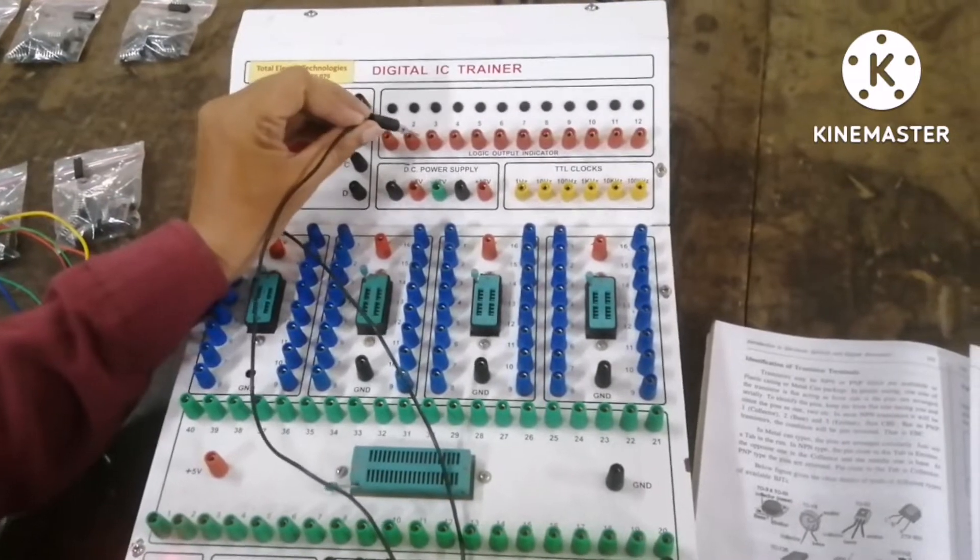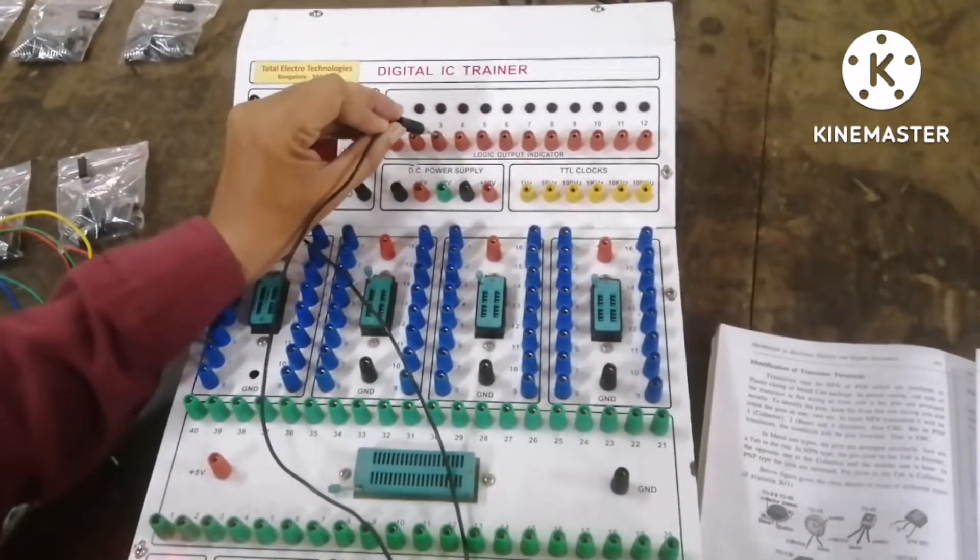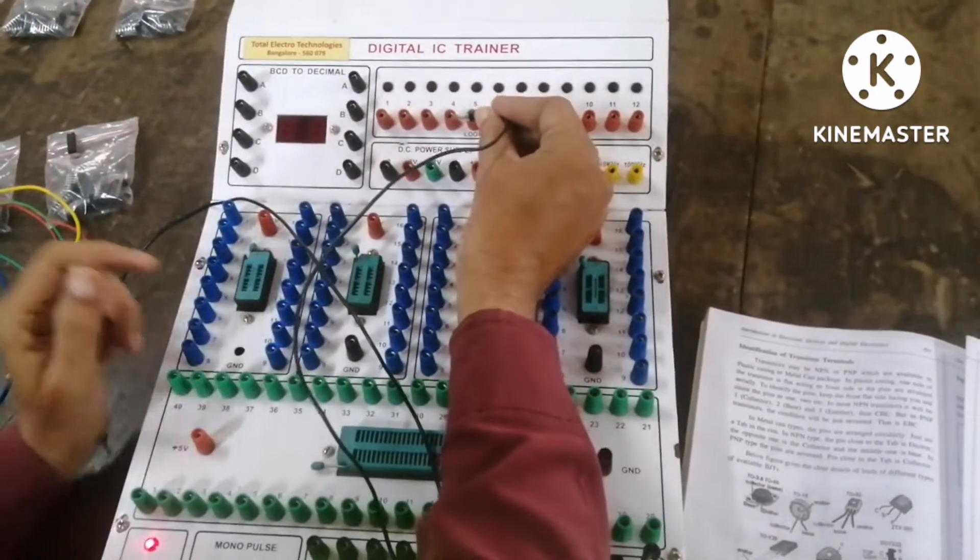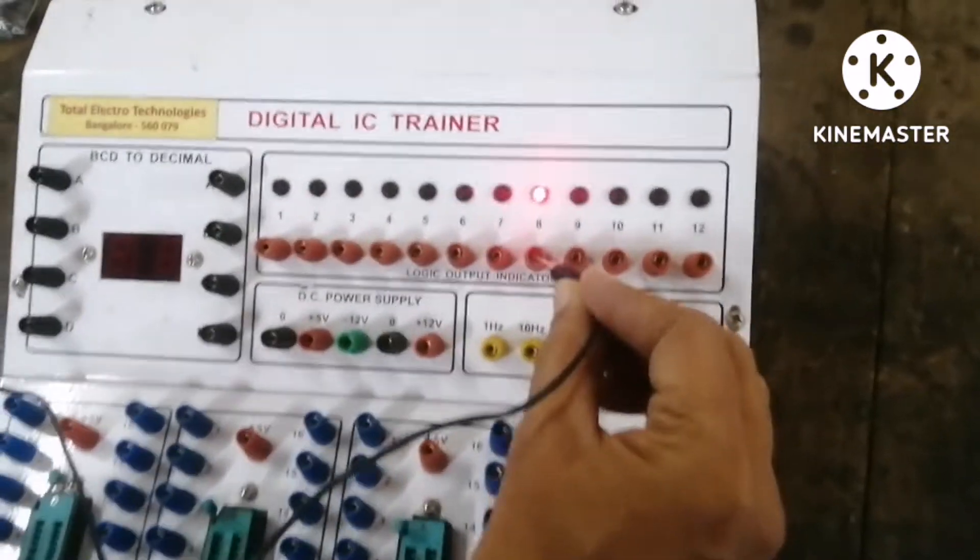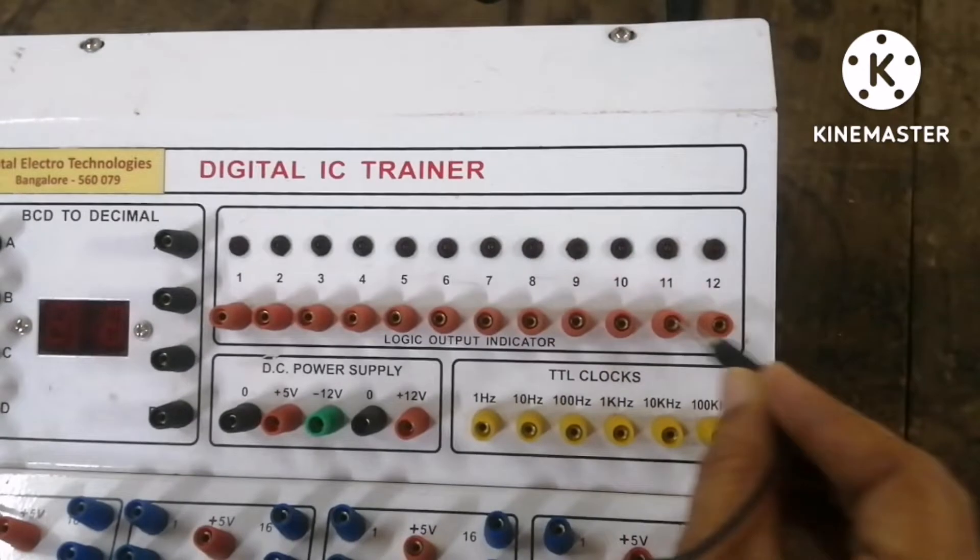Each LED like this can be checked. So if it is indicating red over here, it indicates that it is 1, the output is 1.